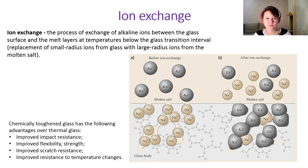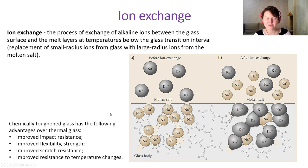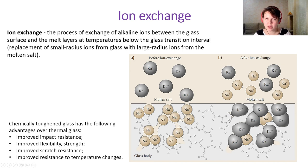The next glass hardening method is ion exchange — the process of exchanging alkaline ions between the glass surface and the melt at temperatures below the glass transition interval. For example, in sodium aluminosilicate glass with molten potassium salts, during ion exchange sodium ions move from the glass structure into the melt and potassium ions move into the glass structure. This exchange gives the process its name.